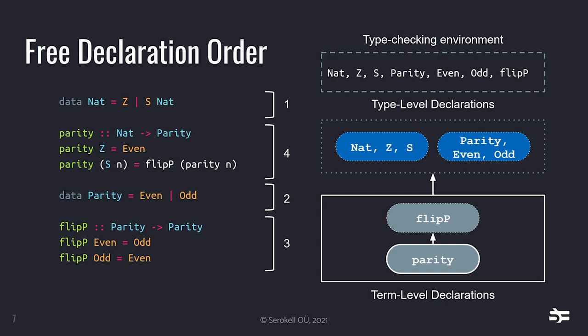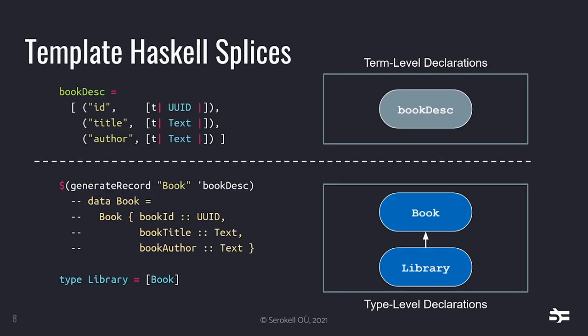We'll go into more detail about how GHC figures out the order of dependency a little later. But first I want to talk about Template Haskell splices.